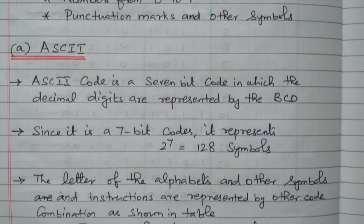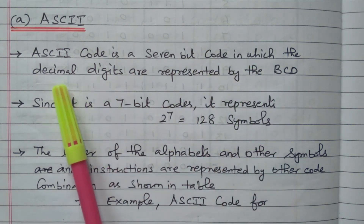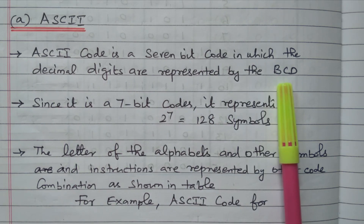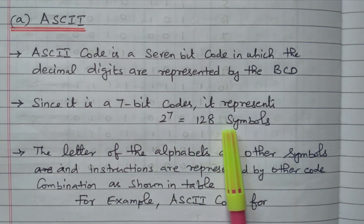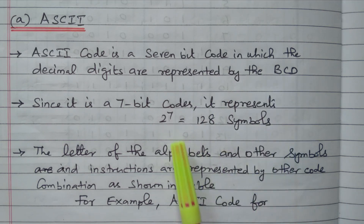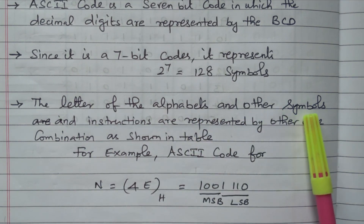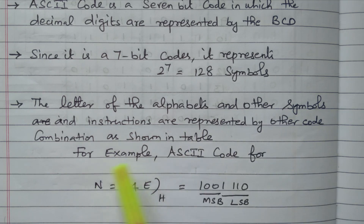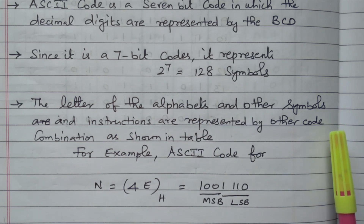ASCII — American Standard Code for Information Interchange — is a 7-bit code. There are 7 bits available, so 2 to the power 7 equals 128 symbols. These 128 symbols are nothing but letters, alphabets, and other symbols. The combination is shown in the table; we have alphabet, number, and special characters, all combined together. A separate table is available for the entire ASCII code.